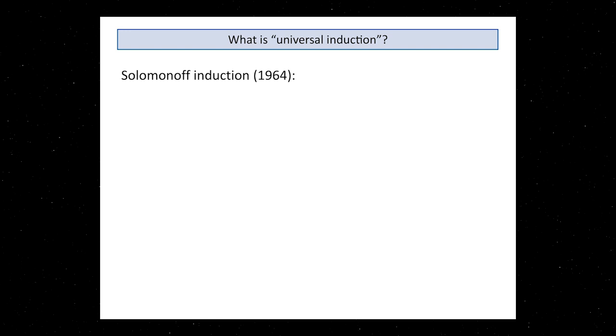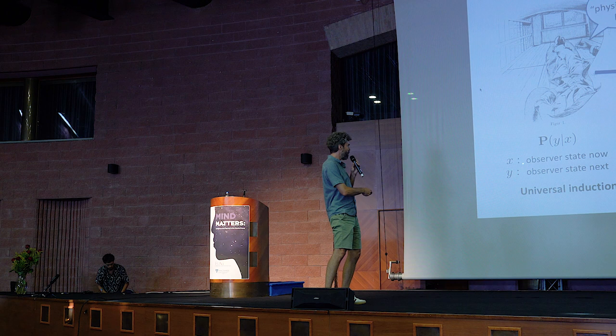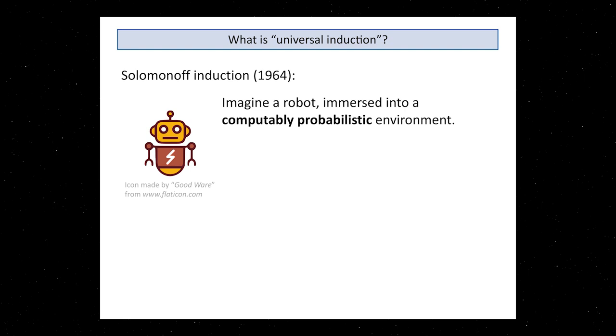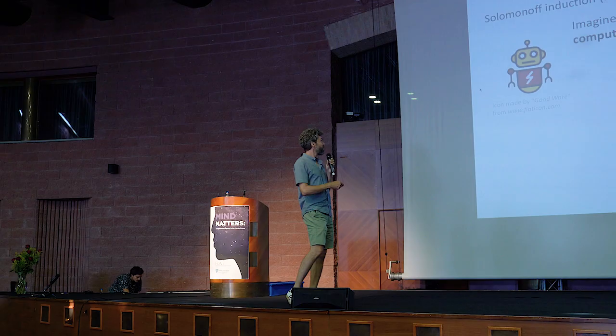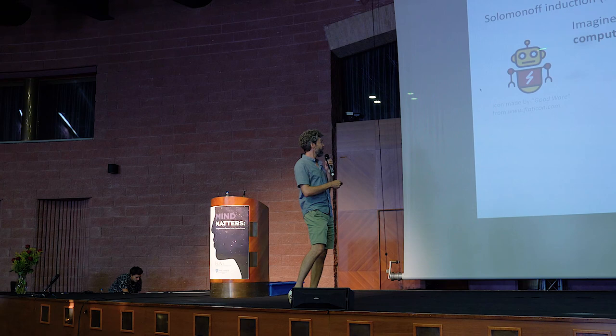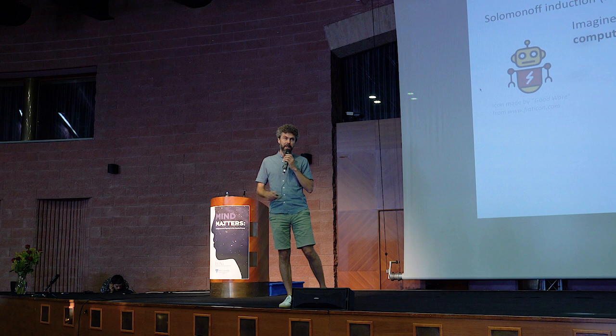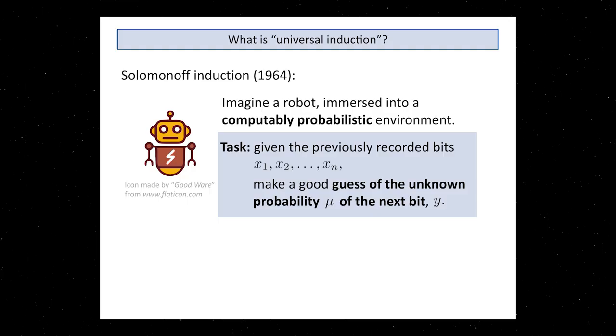So how could this work? What's universal induction? I have to say something about what's the probability of an observer's next state given the current one. Universal induction, the way I mean it here, is for example Solomonoff induction. For those who don't know it, think about a little robot. The robot is just thrown into some unknown environment. It's a probabilistic environment, and the probabilities are completely unknown, but there's a promise, namely the probabilities ought to be computable.